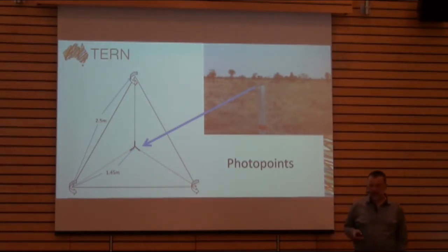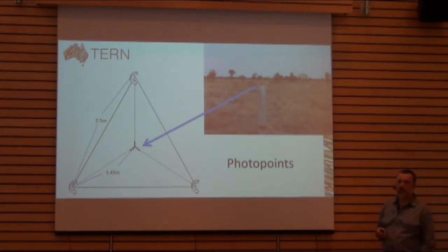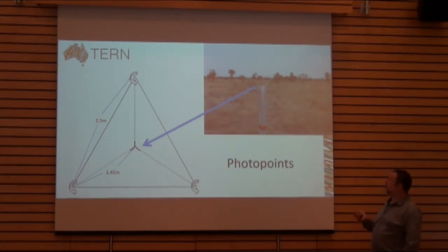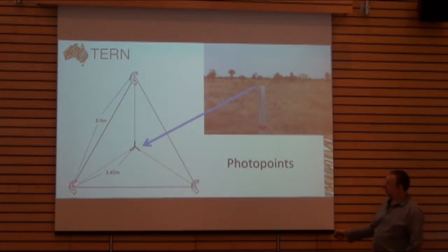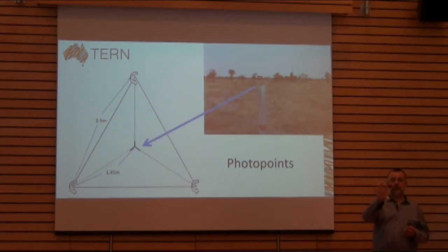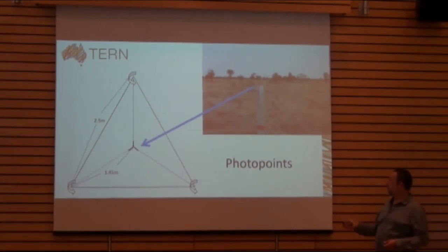We take photo points in a different way to how it's been done historically — we knew we could collect photo points in a way that would provide more information than has historically been available. At the centre of our plot, we put in a fencing post, and around that post at 2.5-metre intervals we put in exposure points. At each point, we take a whole series of SLR digital photos — a photo, then another with 50% overlap, continuing until we've got a complete panorama the whole way around, then moving to the next point. So three complete panoramas of photos, which enables some really interesting analysis.